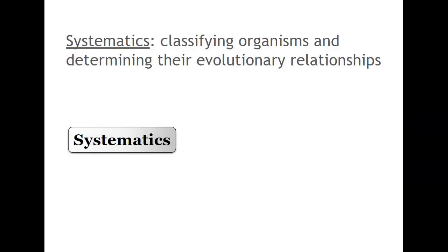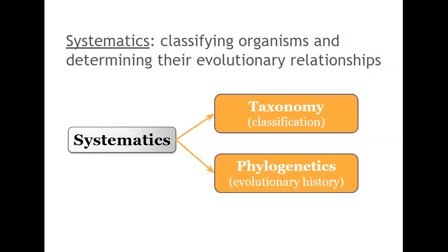Systematics is the idea of classifying organisms to determine their relationships. We talked previously about Carlos Linnaeus, who was the founder of taxonomy and looked at physical traits and morphology. Phylogenetics is looking at evolutionary history and plotting out organisms as they have evolved over time.